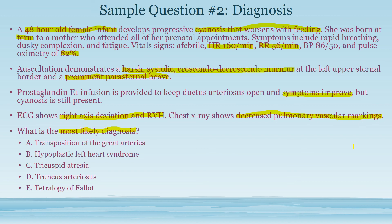The key differentiator is decreased versus increased pulmonary vascular markings. Hypoplastic left heart syndrome and truncus arteriosus both cause increased pulmonary vascular markings — in hypoplastic left heart, the damaged left ventricle means more blood flows to the right side and into the lungs. In truncus arteriosus, the pulmonary artery and aorta are never divided, so blood flows both to the aorta and pulmonary artery; since the pulmonary artery is the lower resistance pathway, you get increased pulmonary vascular markings. Neither fits this case.